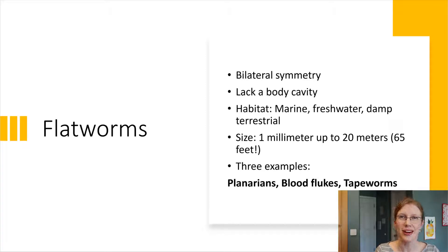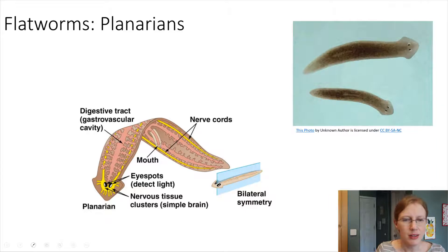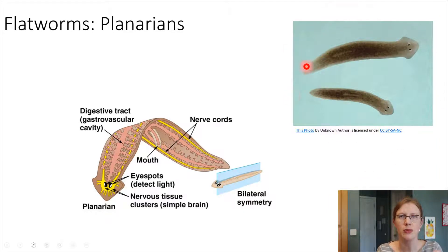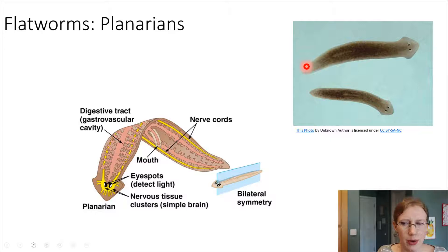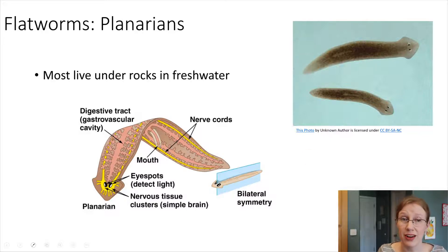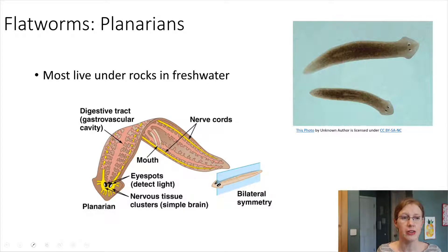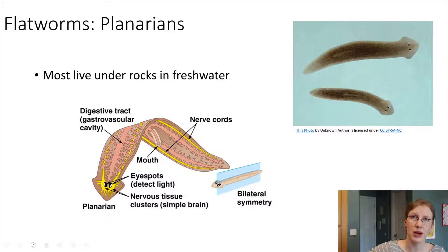Let's look at the planarians. Planarians are little worms that look something like this, and they tend to be very small — just a few millimeters long, much less than an inch in most cases, but you can see them without a microscope. Flatworms mostly live in freshwater, mostly under rocks, and they're just kind of peaceful worms. They are not parasitic; they just hang out in the water and eat things that come by.